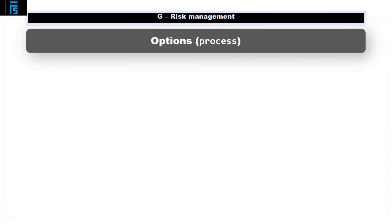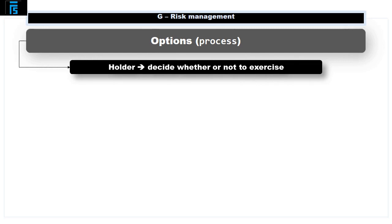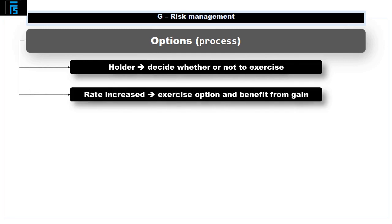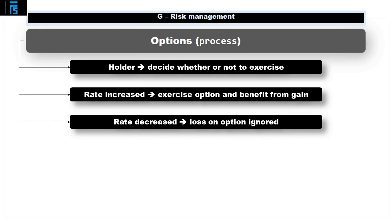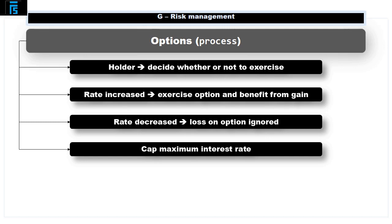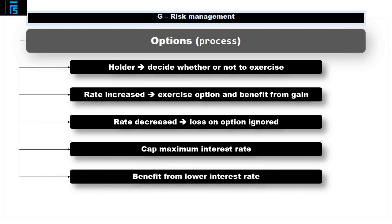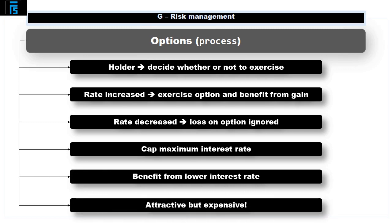An option works in exactly the same way, but with one important distinction. Under an option, the holder can decide whether or not to exercise the option. This means that if the loan cost has increased, the company will exercise the option, thereby benefiting from the gain and reducing the effective loan cost. Conversely, if the loan interest has decreased, the loss on the option will be ignored. Accordingly, an option enables the company to cap the rate of interest payable at a maximum, while still being able to benefit if the rate goes down. Whilst this is obviously very attractive, options have to be purchased, i.e. a premium is paid, and this can make them expensive. Thank you.